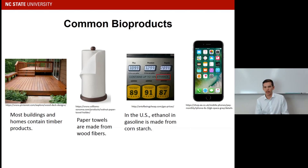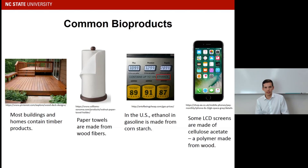Lastly, this one's not so obvious — but LCD screens, which are in most cell phones, have a film on them, a coating. That coating is oftentimes made of cellulose acetate, which is kind of a plastic-like material derived from wood fibers.